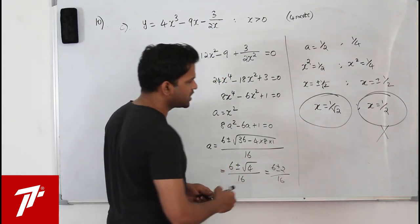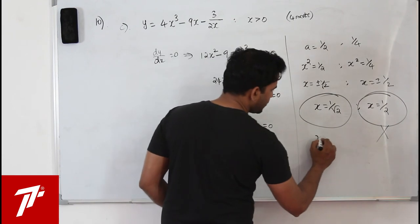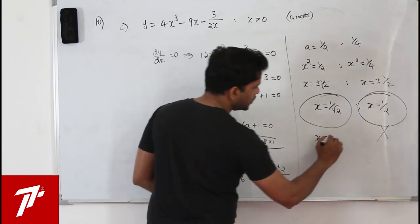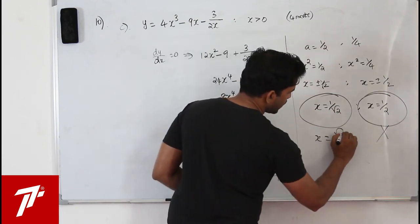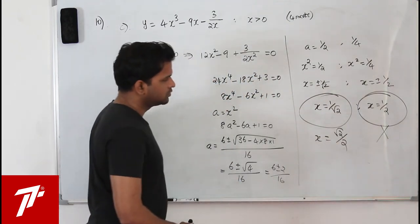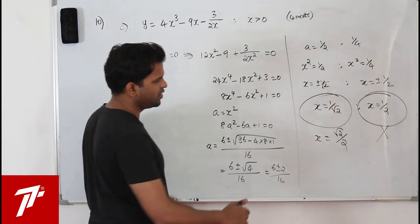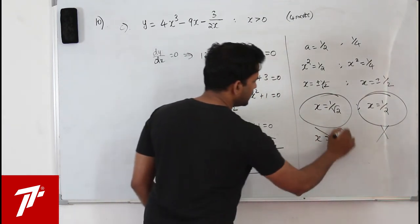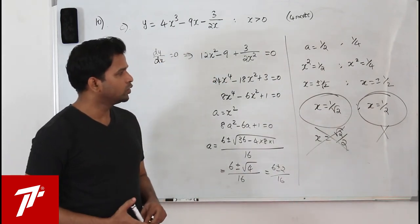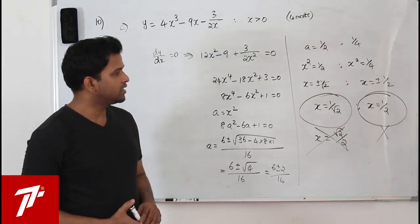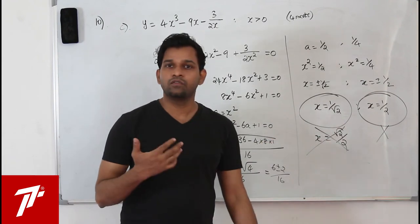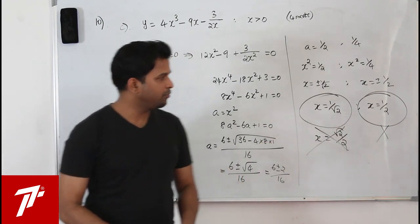Since x > 0, take only positive values: x = 1/√2 and x = 1/2. But x = 1/2 is the known stationary point P from Part A. So the x-coordinate of the other stationary point is x = 1/√2.